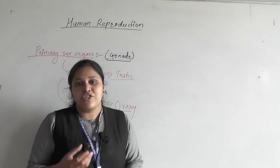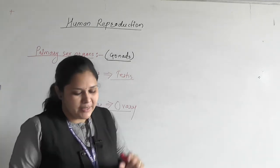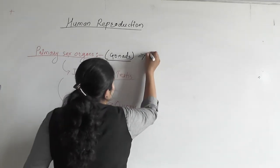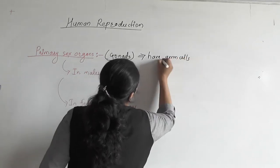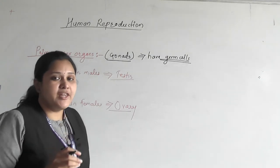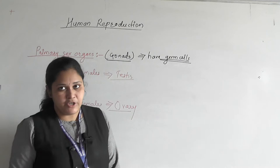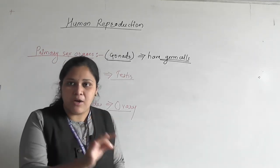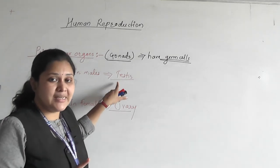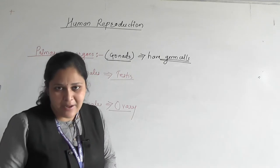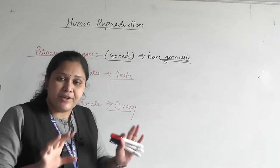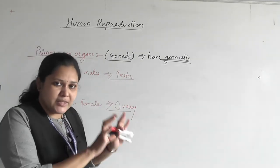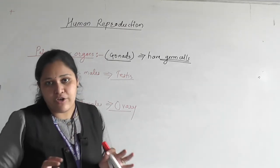These germ cells are potential reproductive cells that have the ability to undergo meiosis, which results in the production of haploid gametes — that is sperm and egg. In testes, spermatogonia are the potentially reproductive cells. These spermatogonia undergo meiosis and give rise to sperms. In case of ovaries, the germ cells are called oogonia. These oogonia also undergo meiotic division and give rise to ova or eggs. This is just a preliminary idea; we are going to study this in detail later.